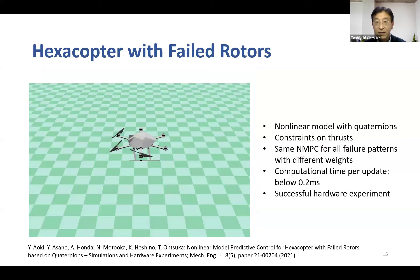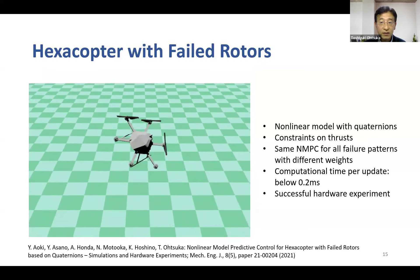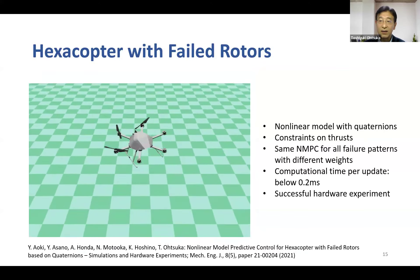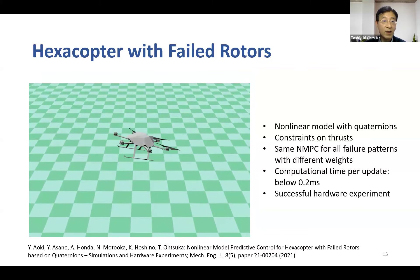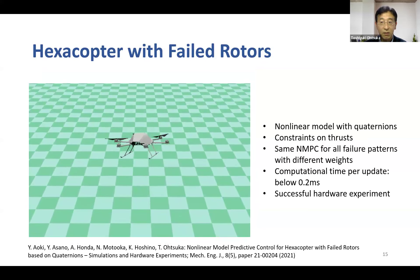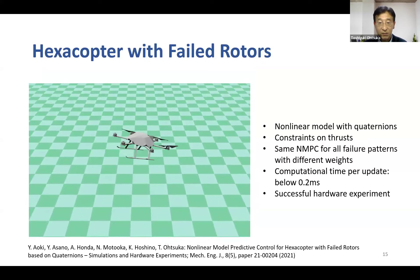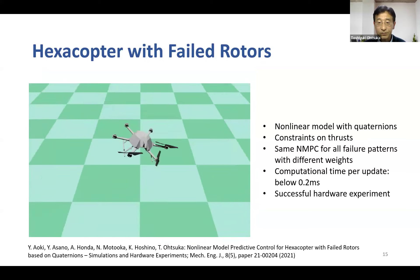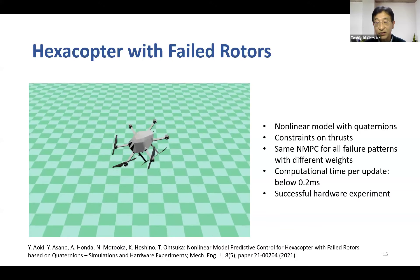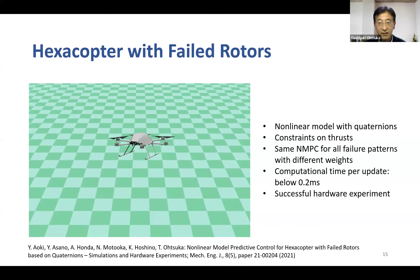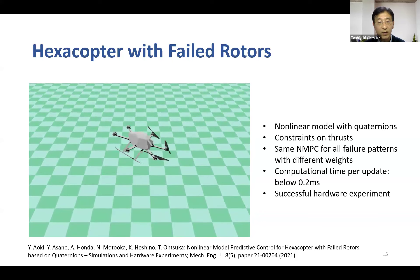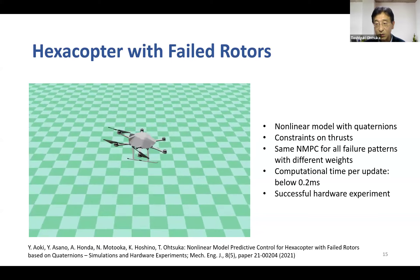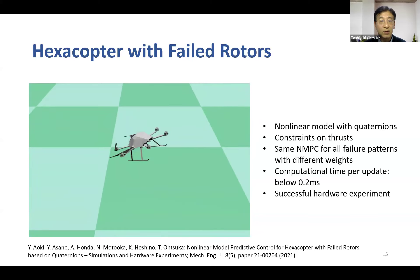Another example is the position control of a hexacopter with failed rotors. We use a fully nonlinear model with attitude represented by quaternions and take constraints on thrusts into account, noting each rotor can generate only positive thrusts. The video shows a simulation of a critical situation where three rotors on one side failed. After falling down, the hexacopter immediately recovers its position with the remaining rotors. This aggressive control is achieved by MPC with computation time below 0.2 milliseconds.